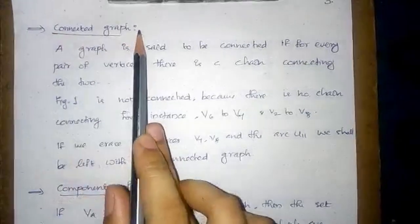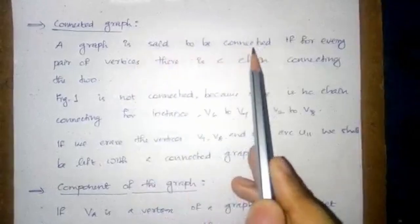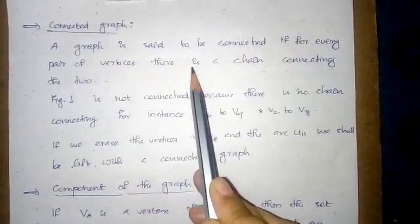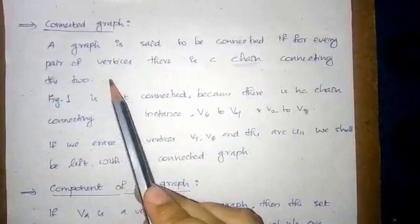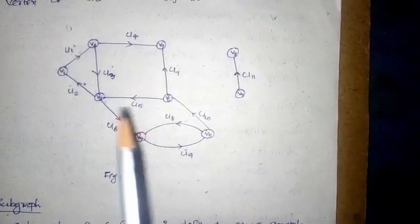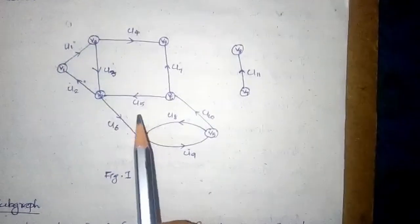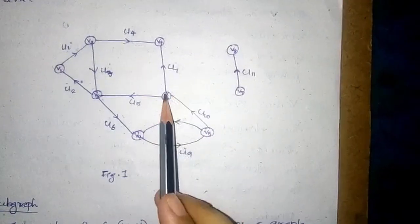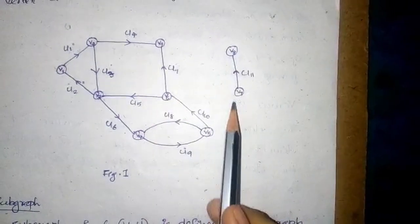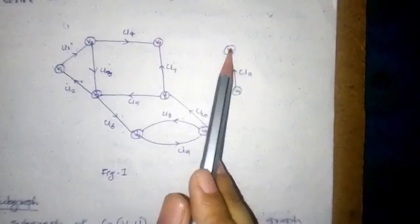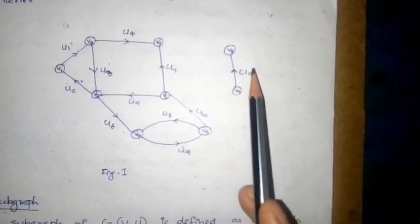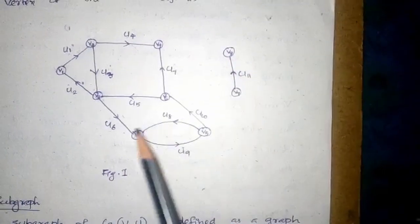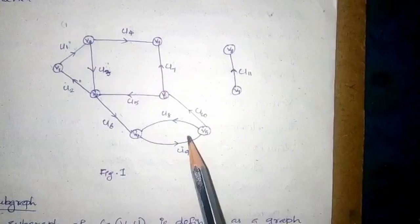Connected graph. A graph is said to be connected if for every pair of vertices there is a chain connecting the two. For example, figure 1 is not connected because there is no chain connecting V6 to V7 or V2 to V8. If we erase vertices V7, V8 and the arc U11, we shall be left with a connected graph.